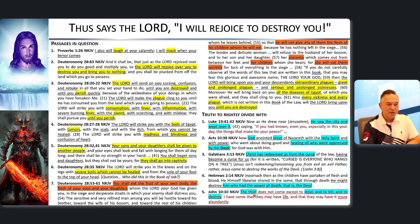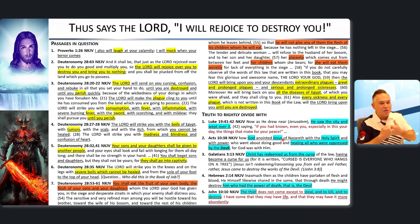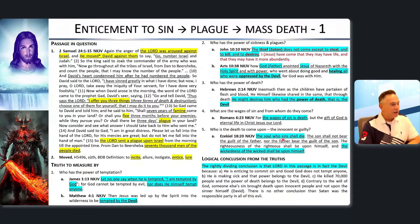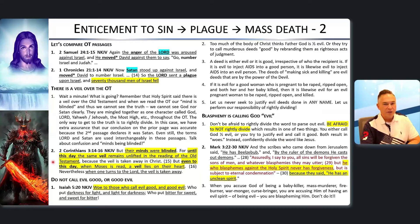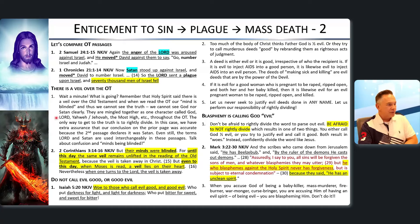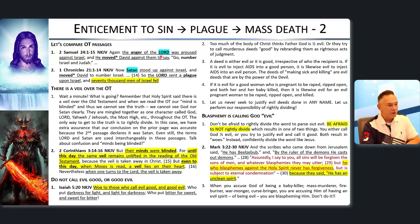John 10:10 also confirms: 'The thief does not come except to steal and to kill and to destroy; I have come that they may have life and that they may have it more abundantly.' There's an absolute contradiction between Old Testament and New Testament — why? Because there is a veil over the Old Testament. As a teaser for next time: 2 Samuel 24:1 says 'the anger of the Lord was aroused against Israel and he moved David against them to say, go number Israel and Judah.'